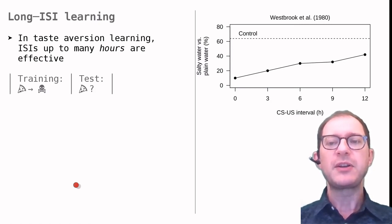Even the pigeons that got sick nine or twelve hours after drinking salty water drank less. In other words, conditioning was effective with a very long ISI interval. This long delay learning is found very often in taste aversion learning.